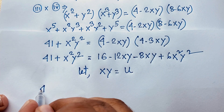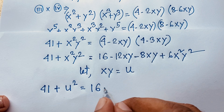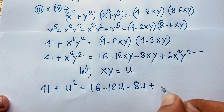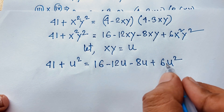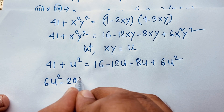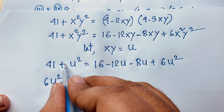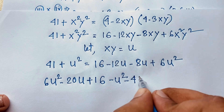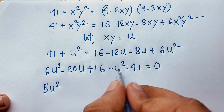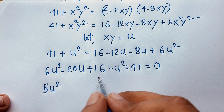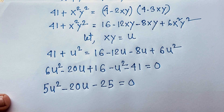So 41 + u² = 16 minus 12u minus 8u plus 6u². Rearranging, we get 6u² minus 20u plus 16 minus u² minus 41 = 0, which gives 5u² minus 20u minus 25 = 0. Dividing both sides by 5, we find u² minus 4u minus 5 = 0.